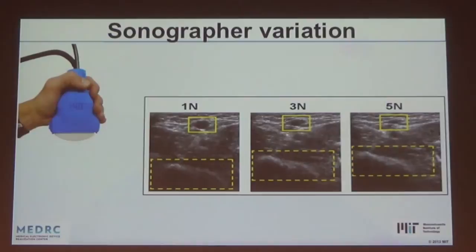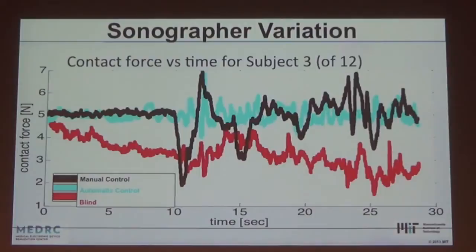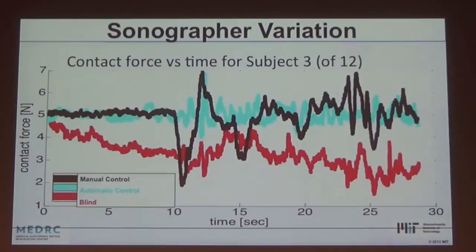In our first study with this force measurement probe, three traces show different conditions. The sonographer is primed on what a 5 newton image looks like. The red trace is where they think they're applying 5 newtons — they saw the gauge at the beginning, then it was taken away — and they're clearly drifting. The black line is where we keep the force gauge in front of them constantly, so they're multitasking between the image, the patient, and the gauge. The blue line is when we have an automatic control system to automatically control the force for them.